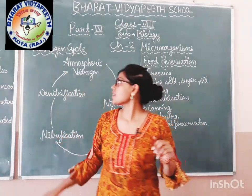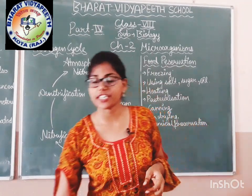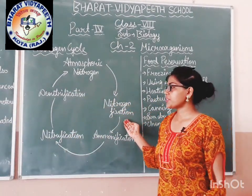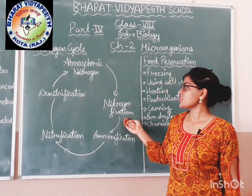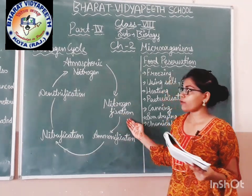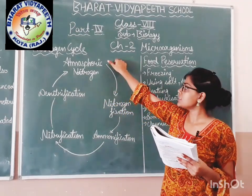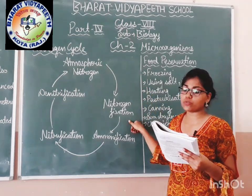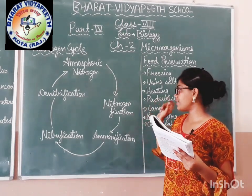The last topic in this chapter is the nitrogen cycle. First, nitrogen is taken from the atmosphere. Then nitrogen fixation is done by bacteria present in the plants and animals — the nitrogen is fixed and converted into nitrate. The process in which atmospheric nitrogen is converted into nitrate is known as nitrogen fixation.